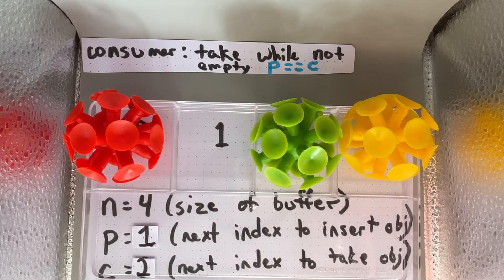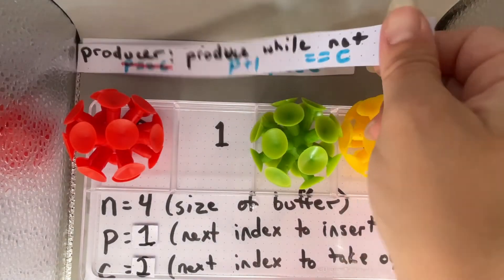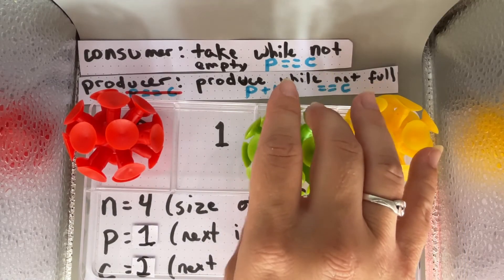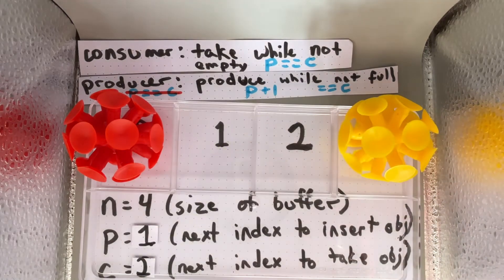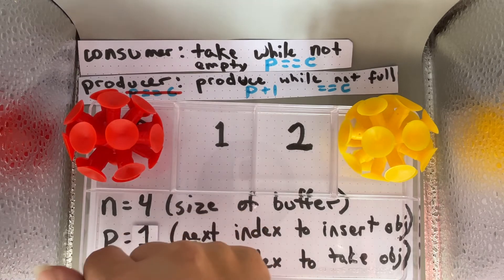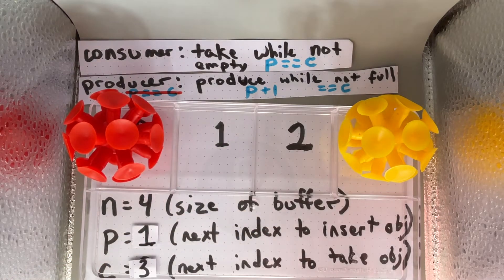If the consumer takes out an object, it takes out the object at 2 and then we set c to be 3 because that's the next object it would end up taking out.